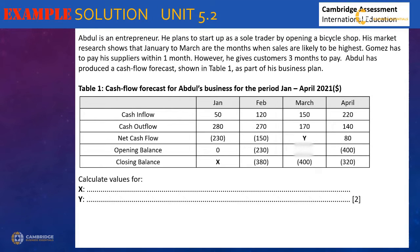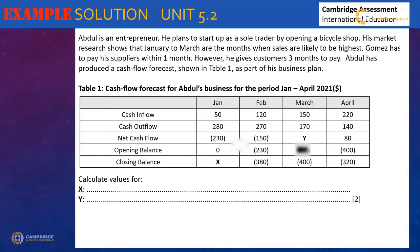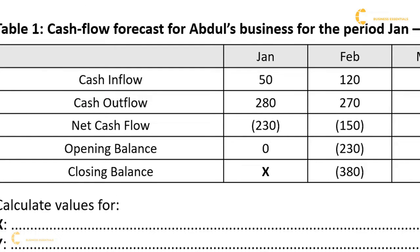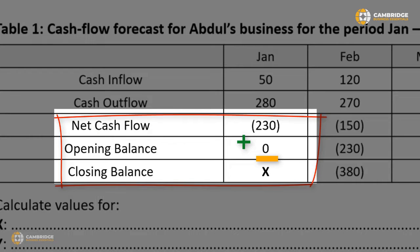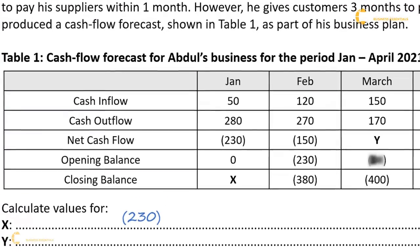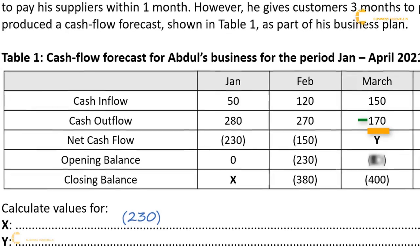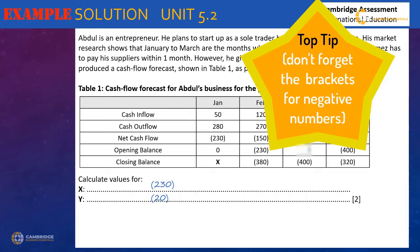You will usually have at least two short calculation questions on paper one, and you only have two minutes for calculating the values of X and Y. You won't get any marks for showing your working on this question as it's just one mark for each correct calculation. To calculate X — the closing balance — we add the net cash flow and the opening balance: in this case negative 230 and zero, so the answer is negative 230. Net cash flow is calculated by subtracting cash outflow from cash inflow. As $150 comes into Abdul's business but $170 goes out, the net cash flow is negative 20. Don't forget to add the brackets or a minus sign in your answers.